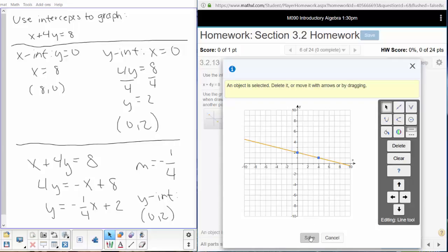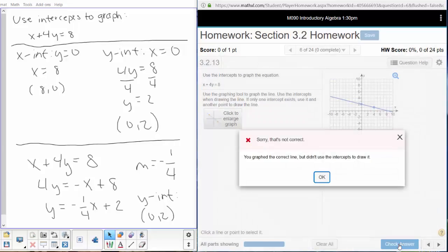If I go ahead and save this, even though the line is correct, and check that answer, it doesn't like it because I did not use the intercepts to draw it. I did graph it correctly, but we need to use the method that they're intending.